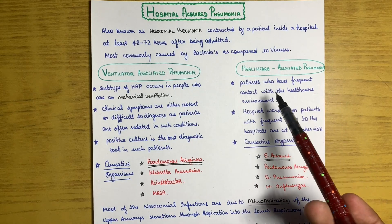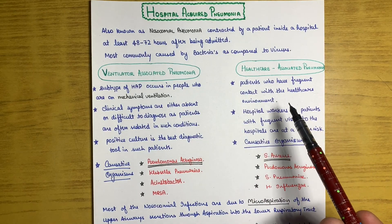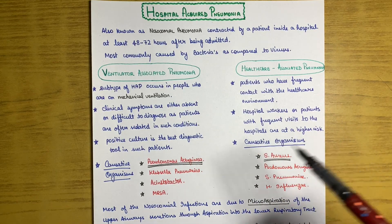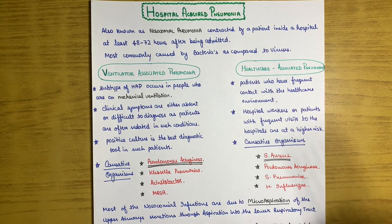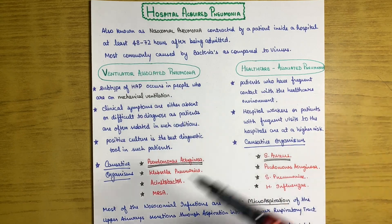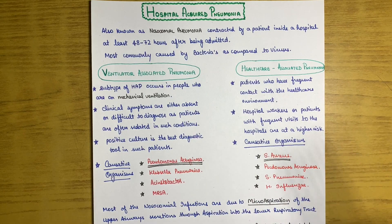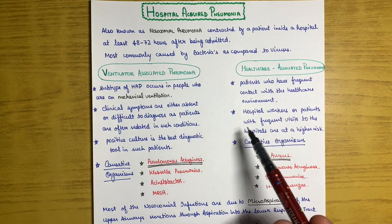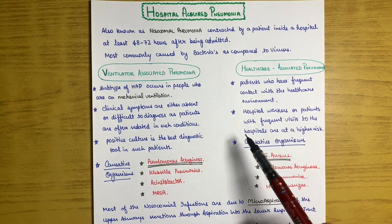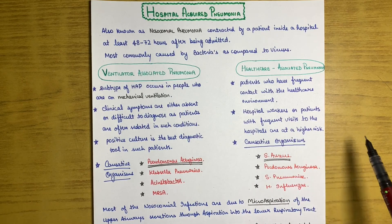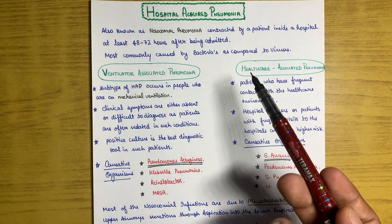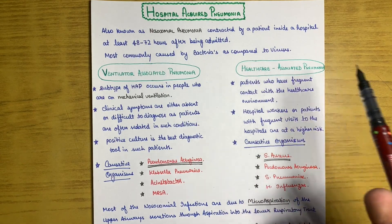The other category is healthcare-associated pneumonia. These are patients who have frequent contact with the healthcare environment — for example, nurses, janitors, or other doctors who frequently work in the hospital environment, as well as patients with frequent visits to the hospital — who are at higher risk.